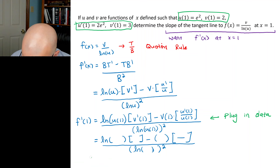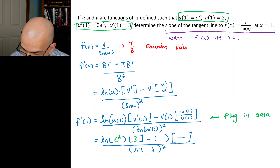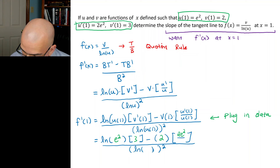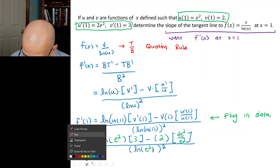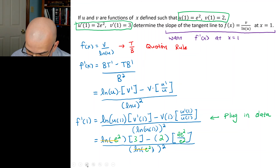Now u(1) = e², so we have ln(e²). v'(1) = 3. v(1) = 2. u'(1) = 2e². u(1) = e². On the bottom we have ln(u(1)) = ln(e²) again. We can use a cancellation law in a few spots — cancel ln(e), we'll be left with the powers.